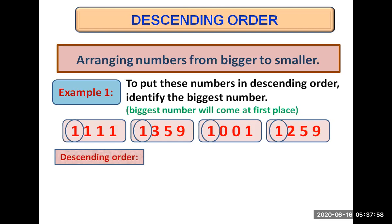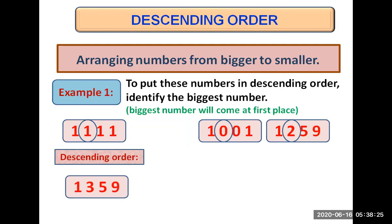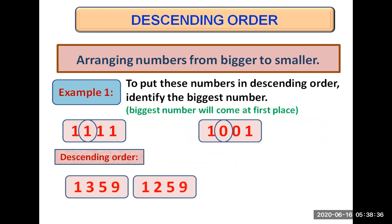So we go to the hundreds place. The first number has one, the second has three, the third has zero, and the fourth has two at their hundreds place. Among these four digits, three is the biggest. So the number 1359 comes at first place as it is the biggest. Among the remaining three numbers, the number with two at hundreds place is bigger than the rest, so it comes at second place.